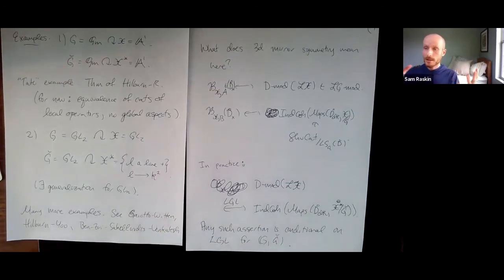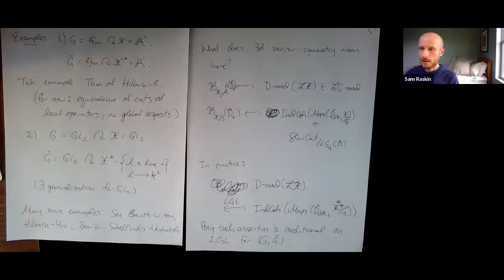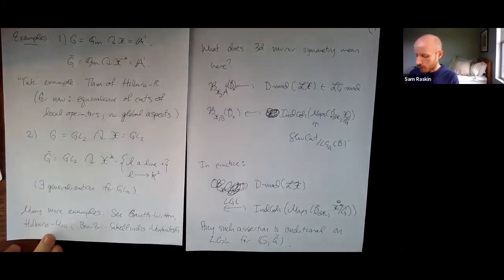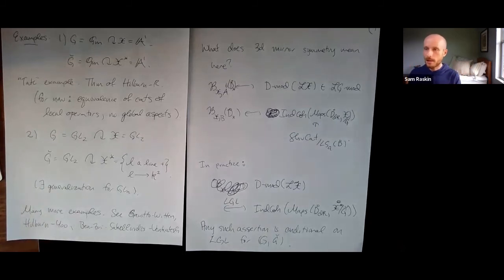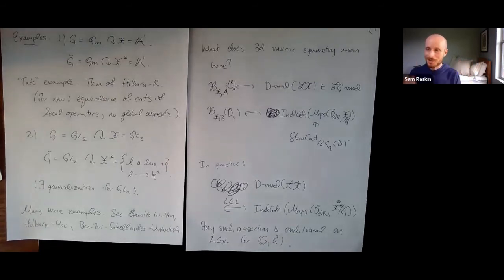There are also global objects involved. Attached to this data you get a certain D-module on Bun_G. David Ben-Zvi, Nadler, and Atreya call that the period sheaf attached to X, originally considered in slightly simplified form by David Kazhdan. They consider these as analogs of period integrals in number theory. There are also global objects on the B side — what these guys call L-sheaves, analogs of special values of L-functions, originally considered by David. Those objects are supposed to match under global geometric Langlands, with some local-global compatibility.